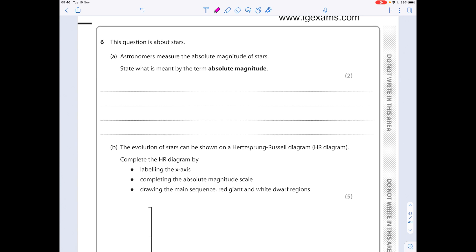This question is about stars. Astronomers measure the absolute magnitude of stars. The stars state what is meant by the term absolute magnitude. It's worth two marks. Thank goodness we've already talked about that. It's a measurement of the brightness of a star at a standard distance.